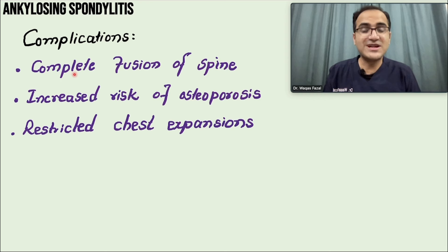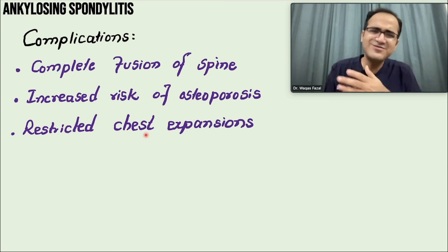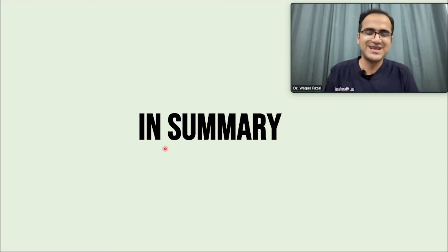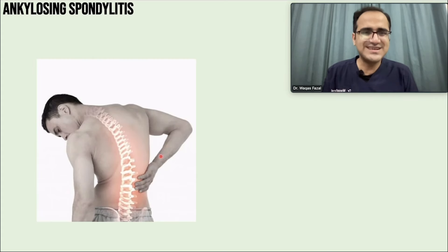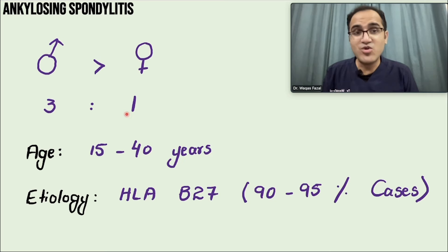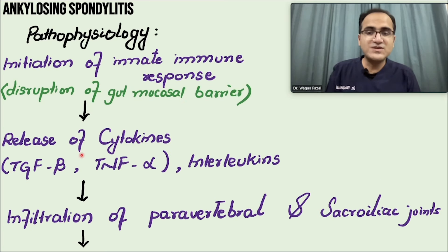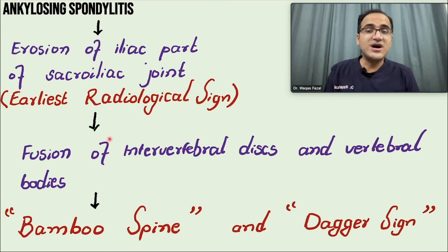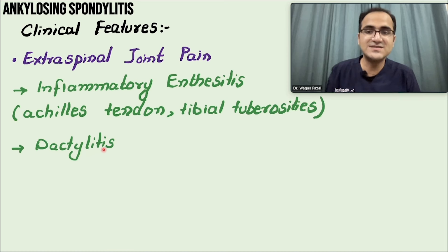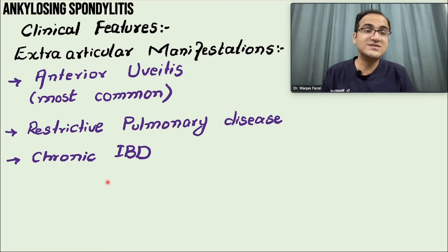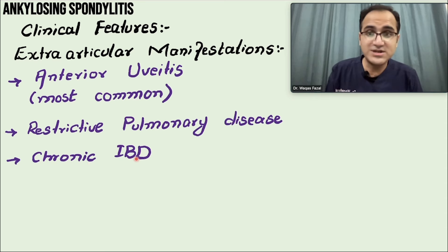Complications of ankylosing spondylitis include complete fusion of the spine, increased risk of osteoporosis, and restricted chest expansion. In summary: ankylosing spondylitis is more common in young males; the earliest radiological sign involves the sacroiliac joint; bamboo spine and dagger sign are late findings; back pain improves with exercise; and key extra-articular associations are anterior uveitis, aortic regurgitation, and chronic inflammatory bowel disease.